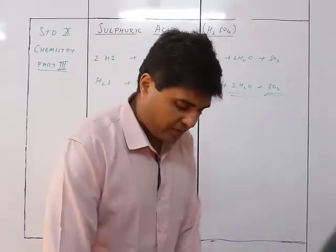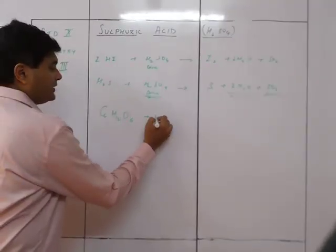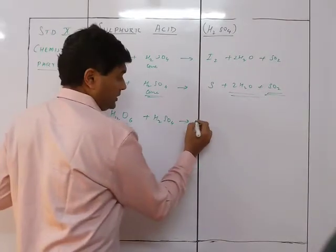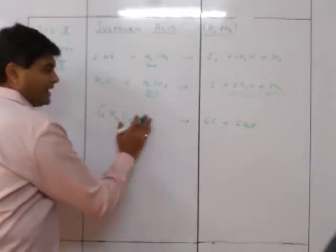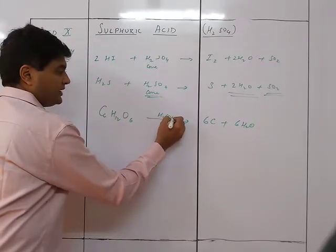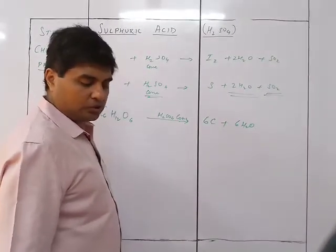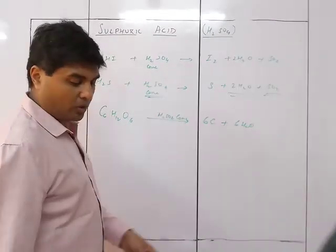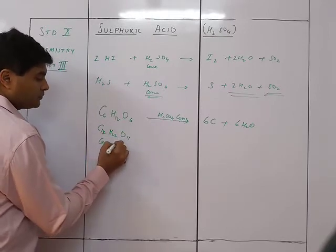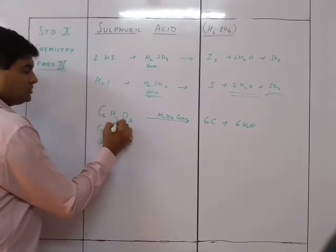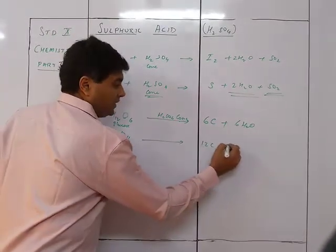When glucose (C₆H₁₂O₆) is reacted with concentrated H₂SO₄, it gives 6C + 6H₂O. Similarly, cane sugar (C₁₂H₂₂O₁₁) reacted with concentrated H₂SO₄ gives 12C + 11H₂O.